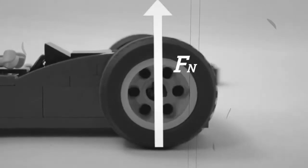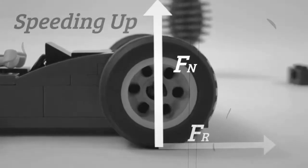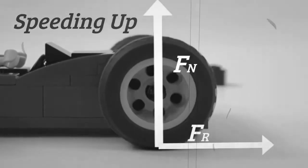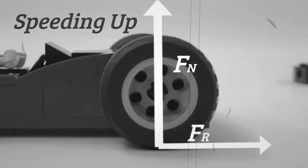Conversely, if the driver presses the accelerator, the tires will try to turn faster, thus producing a friction force forward on the car, causing it to speed up.